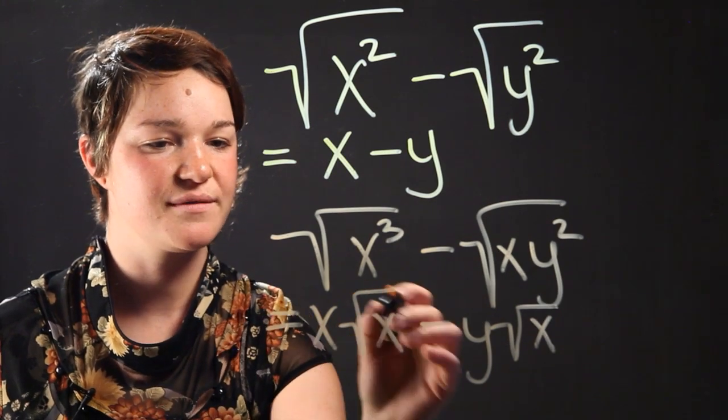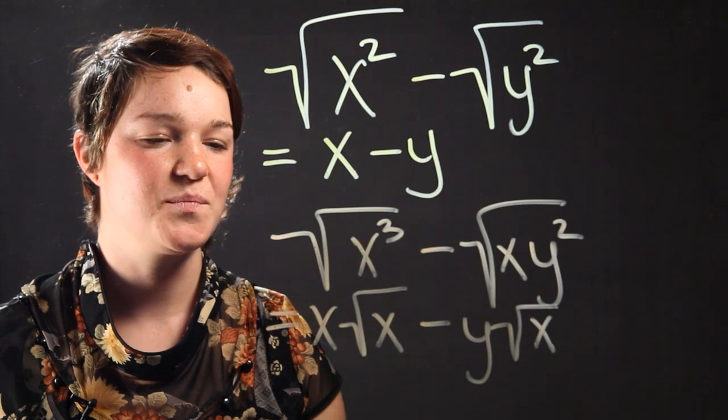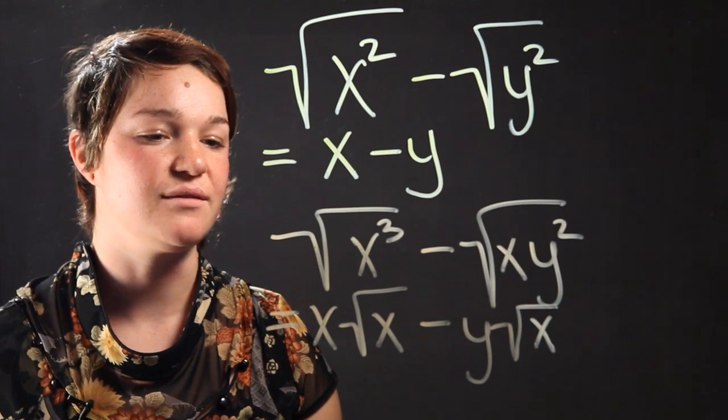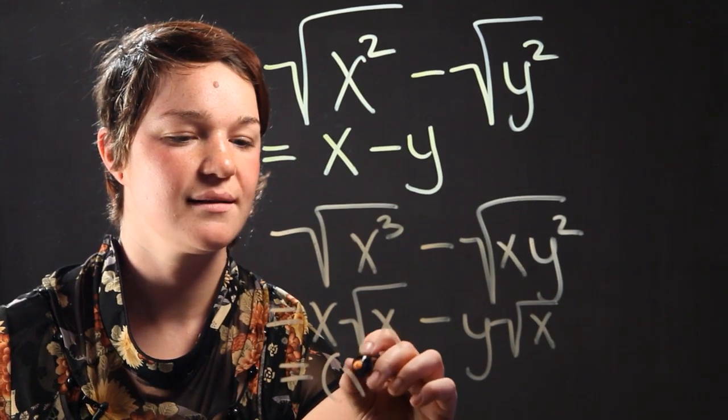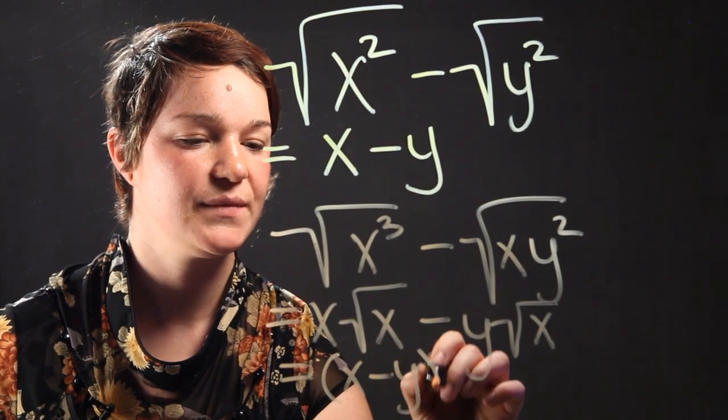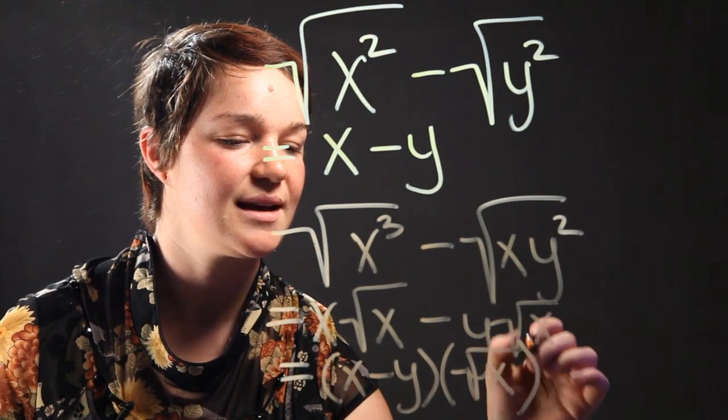Because both of these have radical x within them, we can simplify this expression even more. This is going to turn into x minus y, and we're taking out the radical x out of the expression.